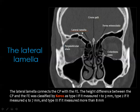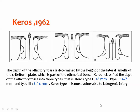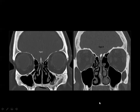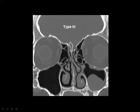The lateral lamella is the intermediate zone between the cribriform plate and the fovea ethmoidalis. The depth of this area is measured by the Keros classification and divided into three types: Type 1 where the depth of the olfactory fossa is less than 3mm; Type 2 from 4 to 7mm; and Type 3 from 8 to 16mm. Type 3 is the most vulnerable to iatrogenic injury during endoscopic surgery for the paranasal sinuses.